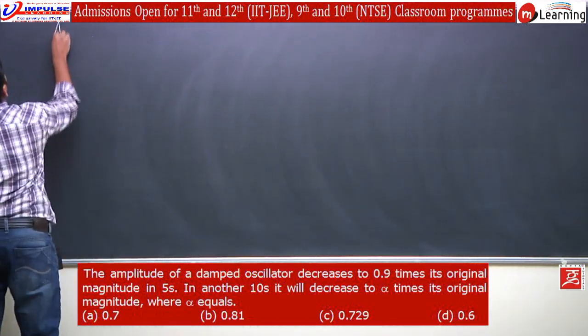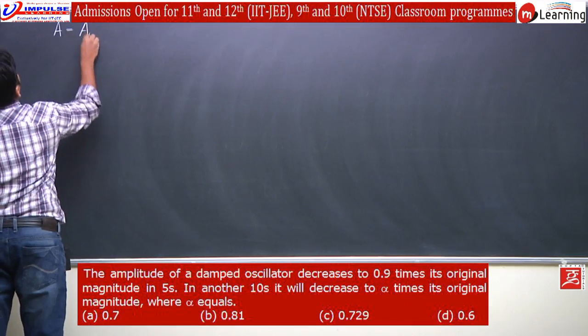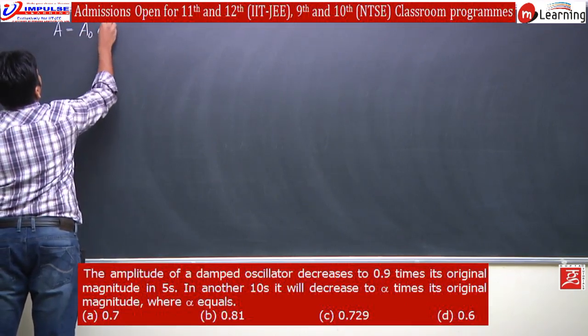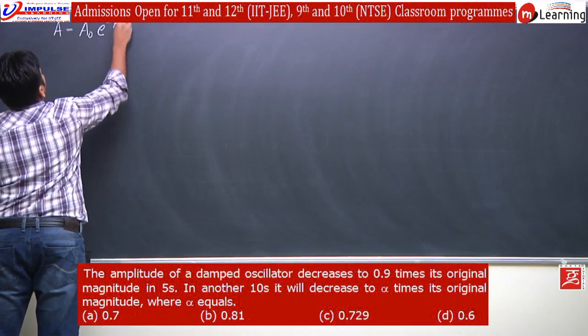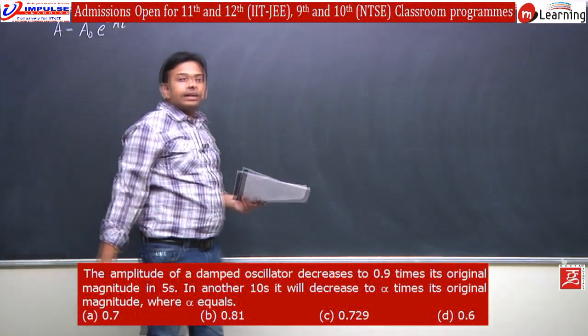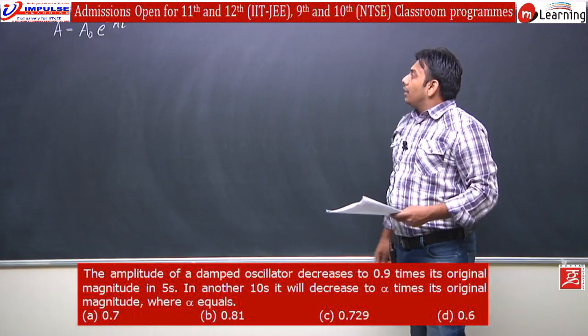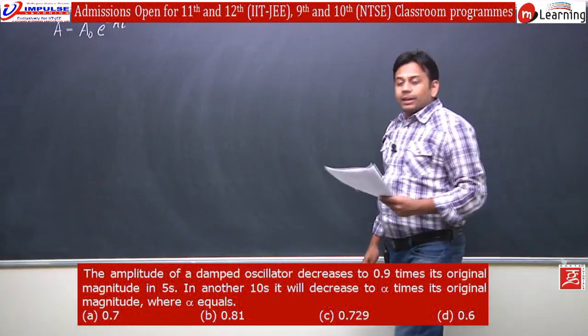A general equation can be written as A equals A0 e to the power minus kt, where k is some constant. A0 will be the initial amplitude.